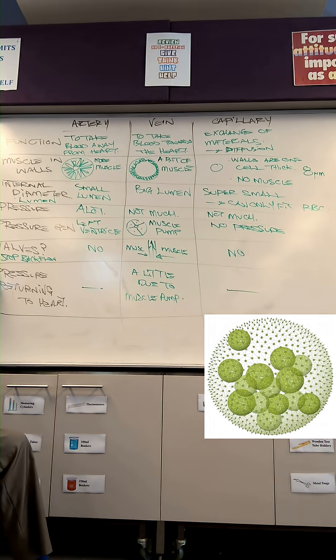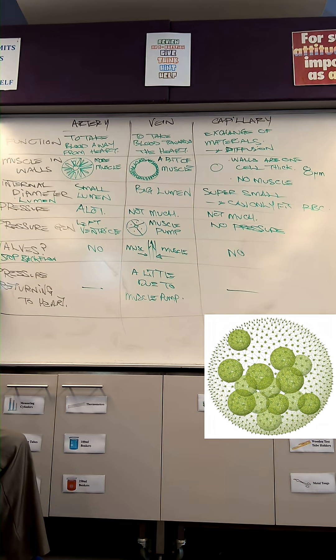Valves. Arteries don't have valves because valves stop the backflow of blood. Because arteries are under so much pressure, there's no risk of it ever going backwards.